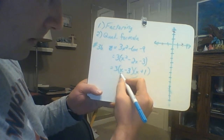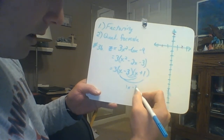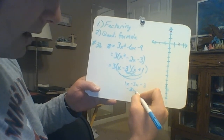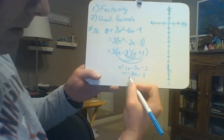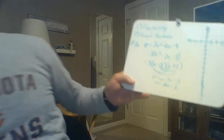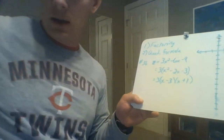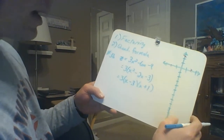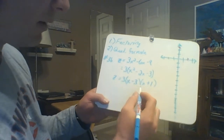Here's how to check: x times x is x², x times 1 is 1x, negative 3 times x is negative 3x, and negative 3 times 1 is negative 3. The two middle terms add up to negative 2x, confirming our factoring is correct. So we have the factored form: 3(x minus 3)(x plus 1). It gets harder when the leading coefficient isn't 1, but we can work through examples of that during our Google Hangout.